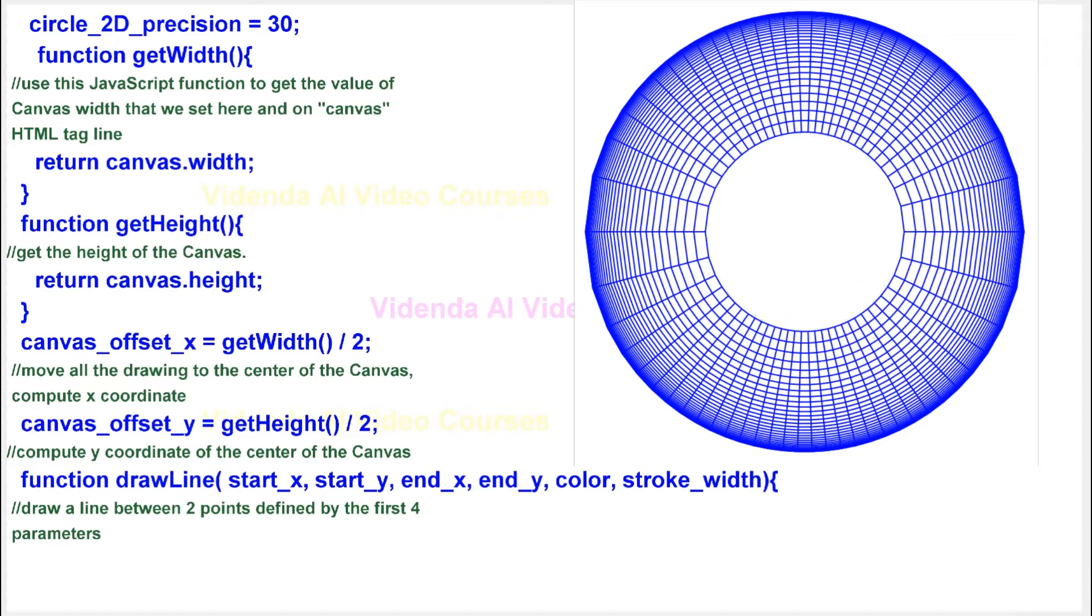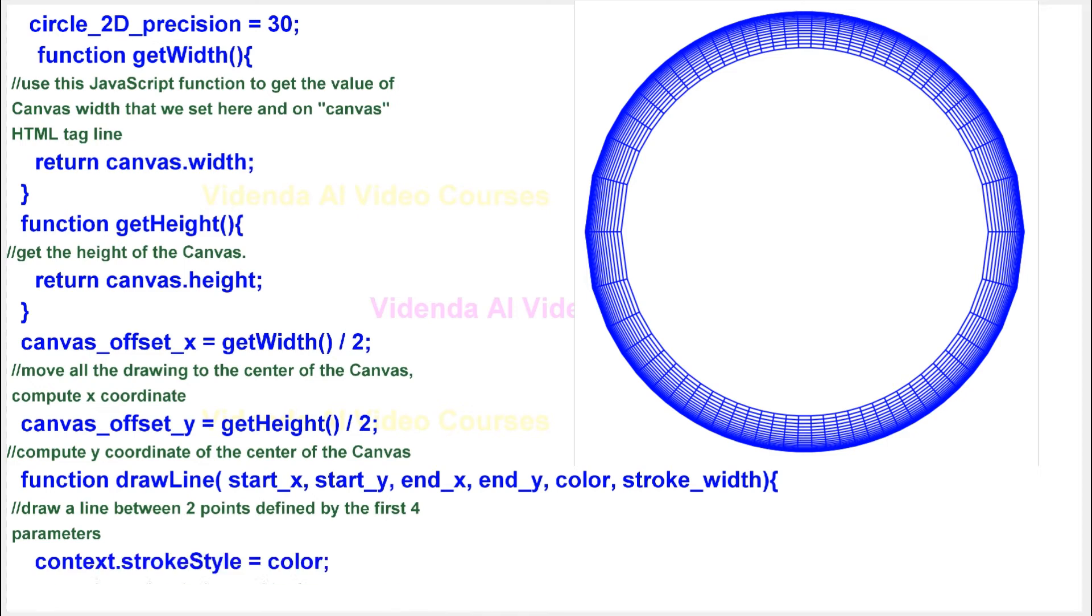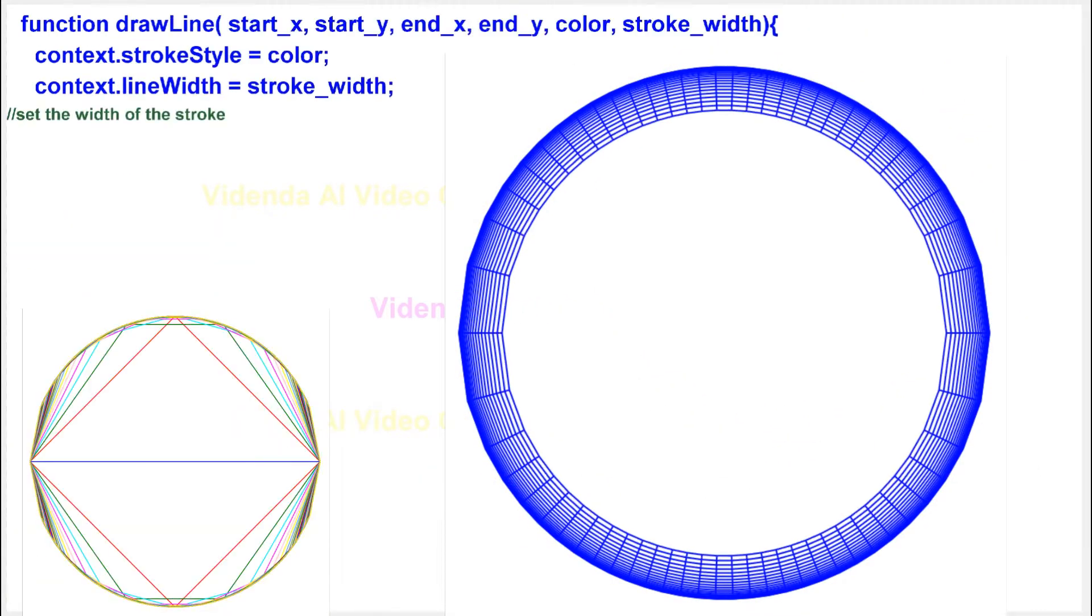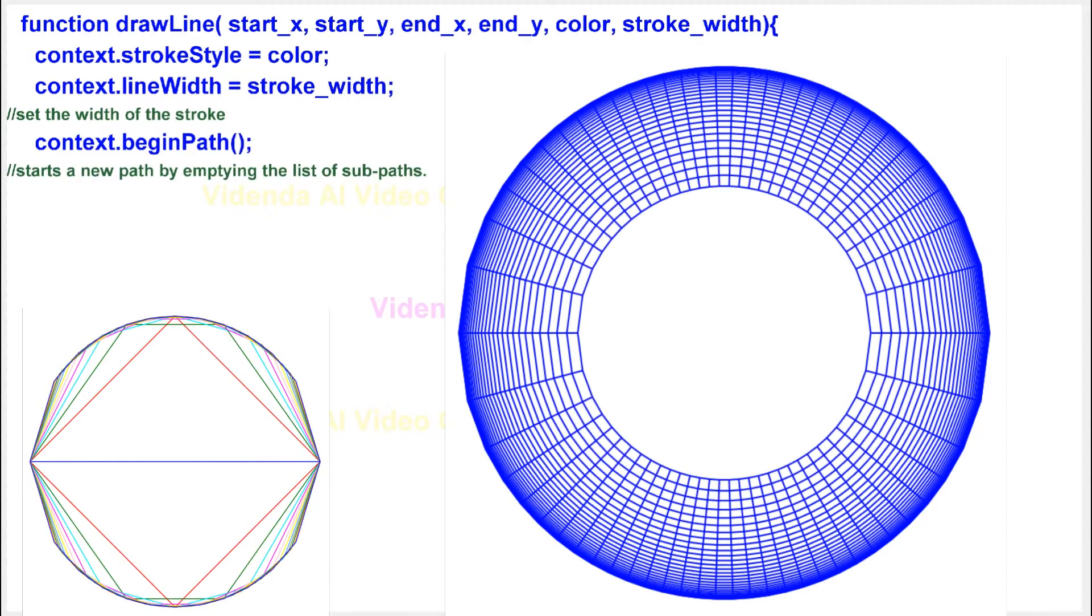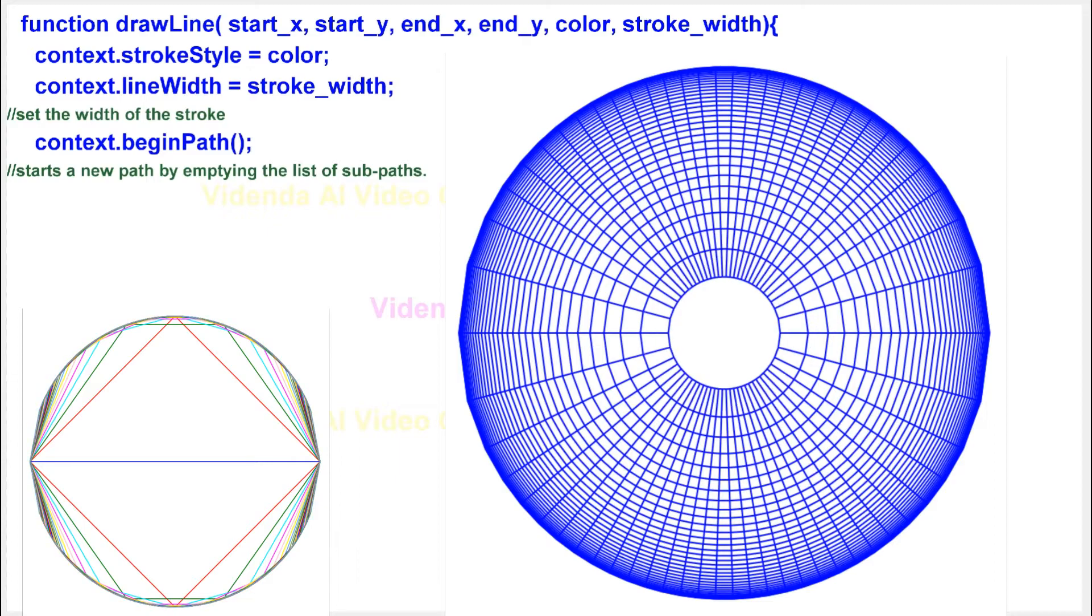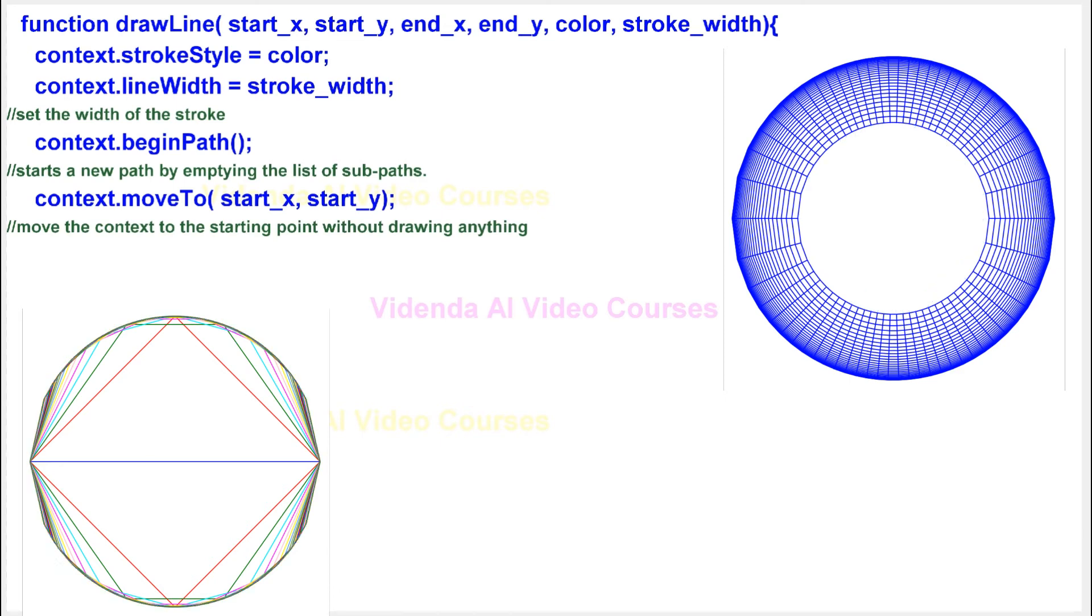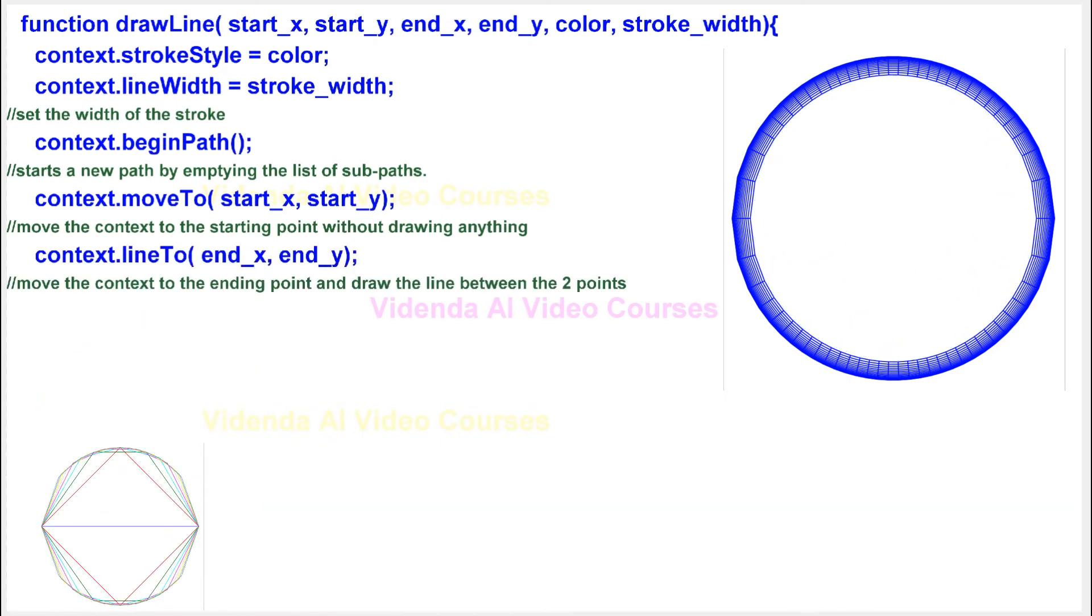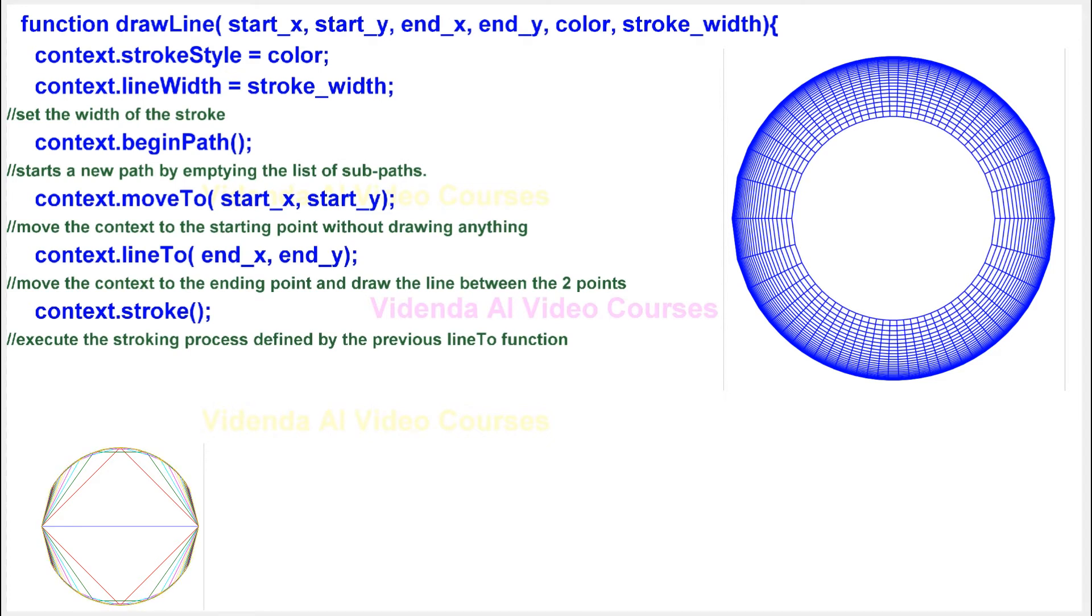Draw a line between two points defined by the first four parameters. Set the color of the stroke used to draw the line. Set the width of the stroke. Starts a new path by emptying the list of sub-paths. Move the context to the starting point without drawing anything. Move the context to the ending point and draw the line between the two points. Execute the stroking process defined by the previous line2 function.